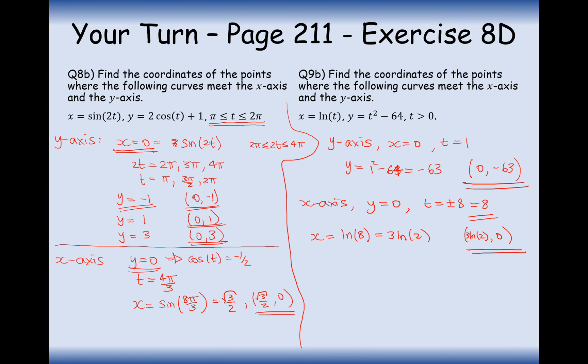Have a go at plenty of questions from exercise 8D. The key method is: set one axis coordinate equal to zero, find the t values, and substitute those t values into the other equation to get the correct coordinate. Have a go at the problem solving and exam style questions. Persevere through the difficult ones and ask your teacher for help if you need any. Thanks very much for watching.